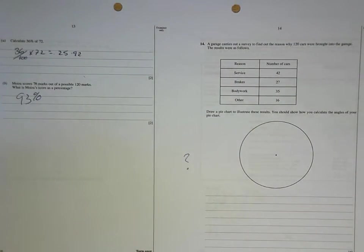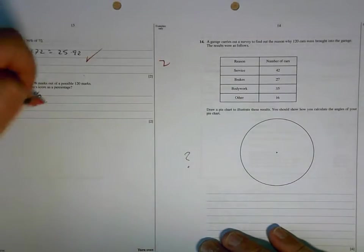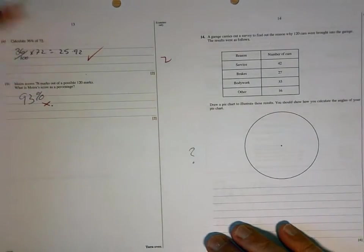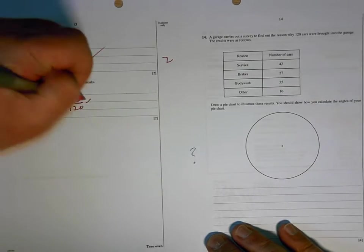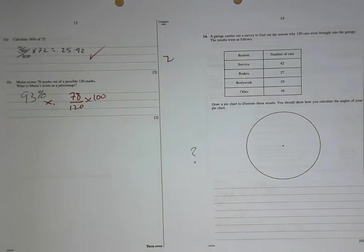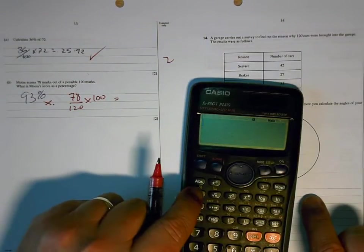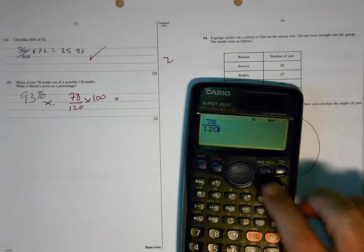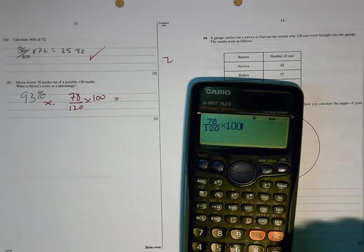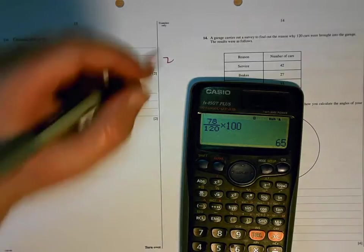£25.92 is correct. That's not right. Now, the sum that you have to do is 78 out of 120 times 100. And on your calculator, you can put that in exactly as you see it. So, you use the fraction button. 78 out of 120 times 100 equals 65.